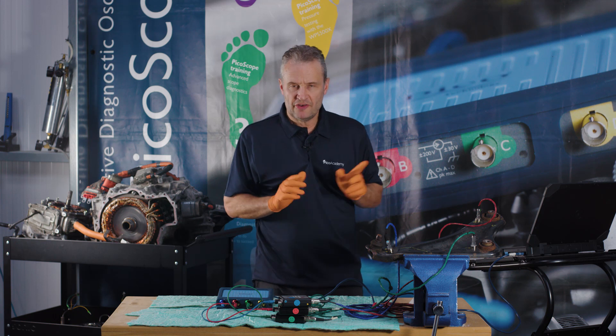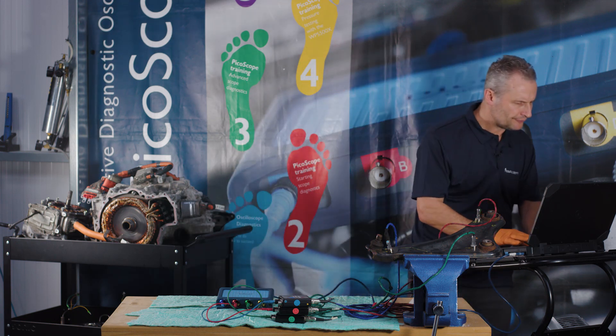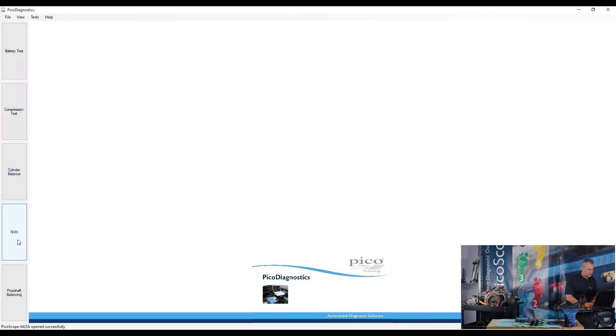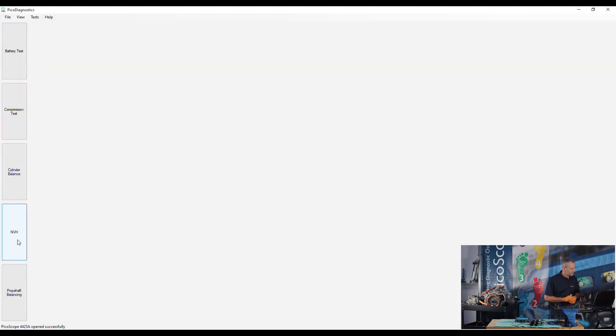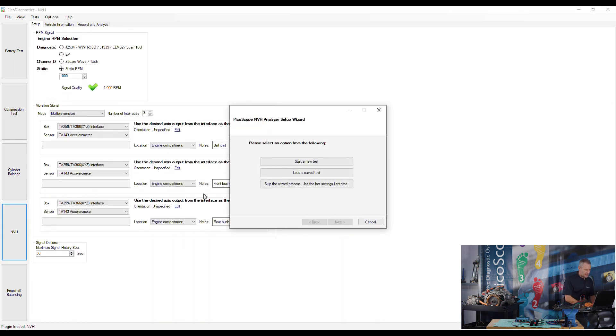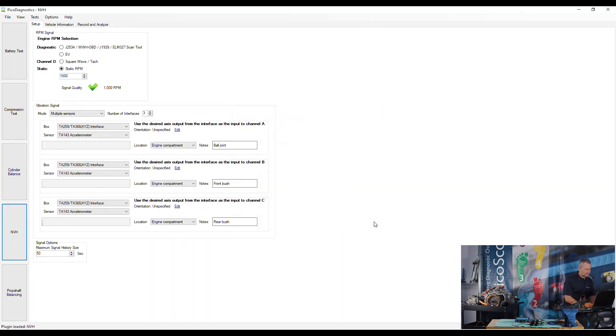We'll go to NVH and set up for multiple sensor mode. PicoScope 4425a is connected. Click on NVH. We are already set up as multiple sensors and we have chosen three sensors. Speed input in this scenario is not important, so we'll just go for a static RPM.